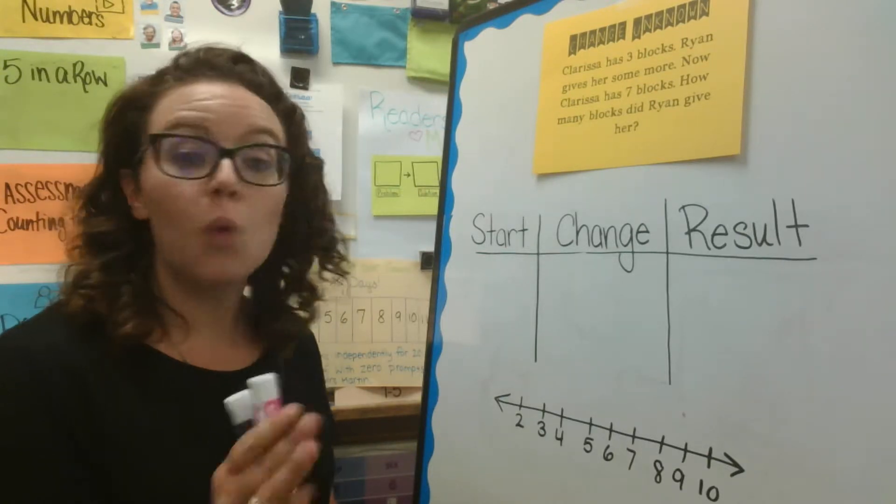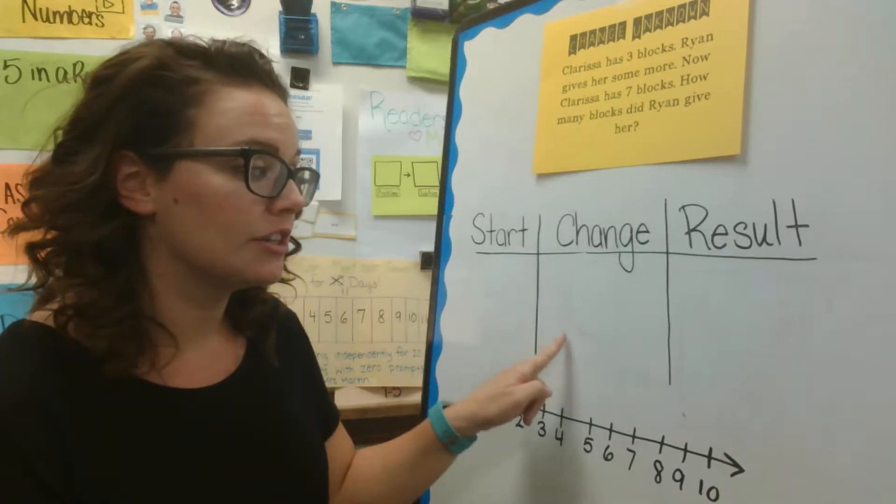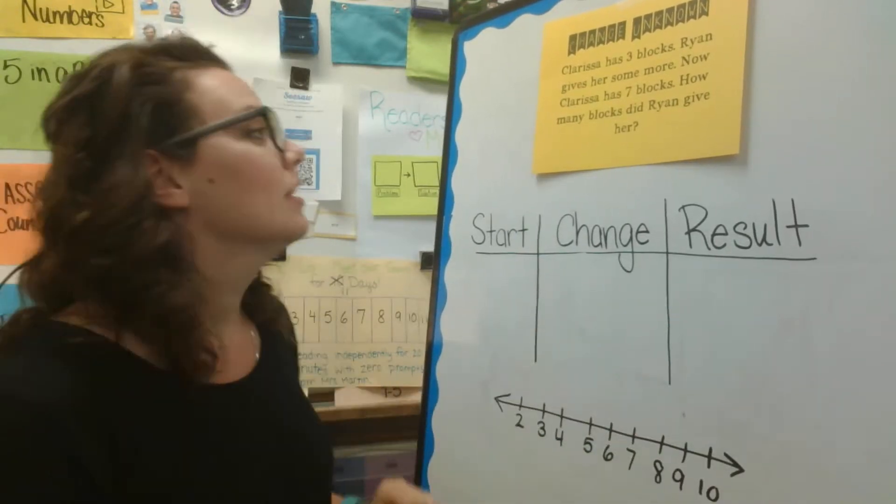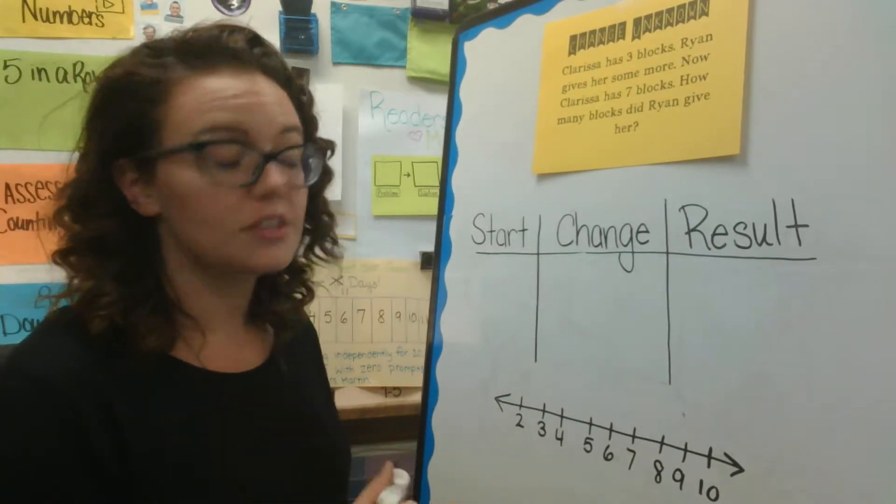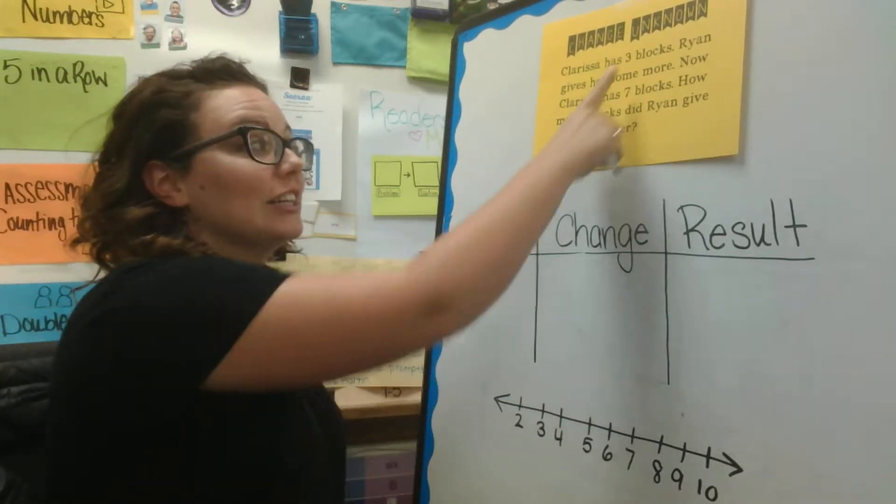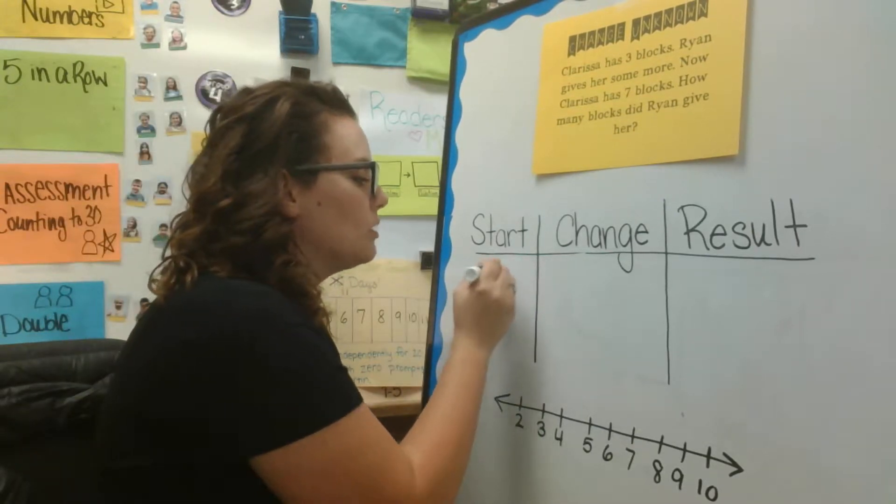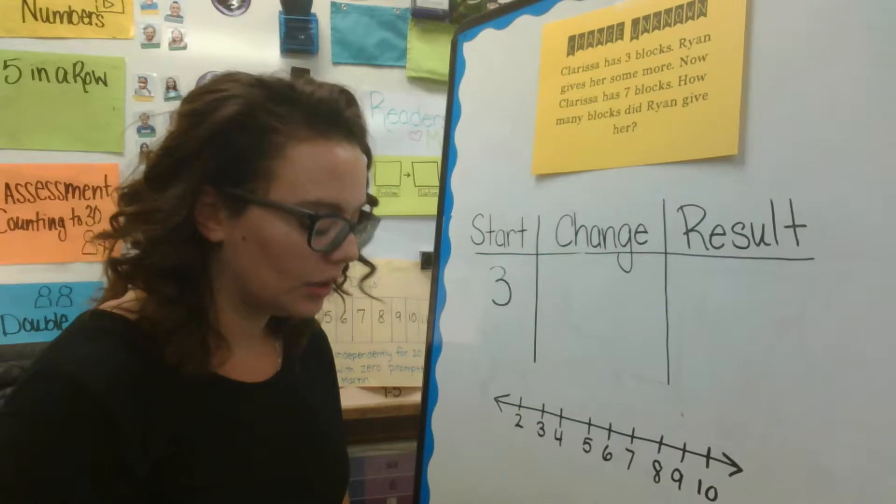All right, let's walk through this problem with our start change result chart or our SCR chart. Now, we know the start this time. We know that Clarissa has three blocks. I'm going to put the number three under my start column.